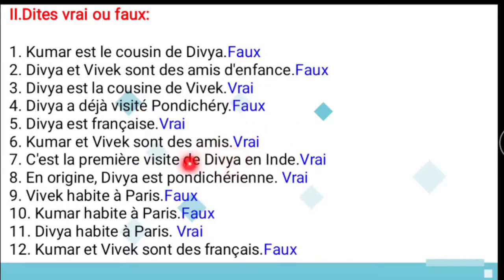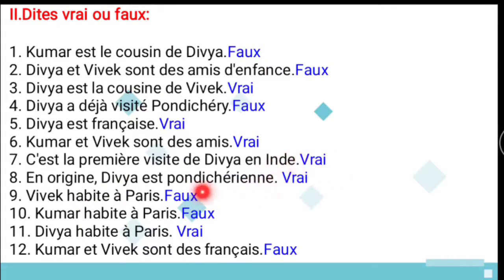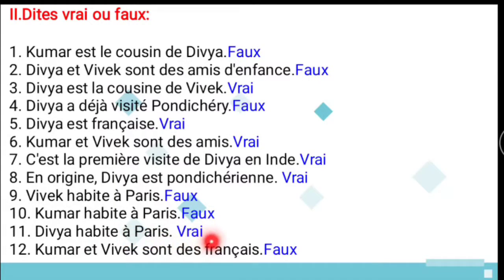Statement 6: Kumar and Vivek are friends — True. Statement 7: This is Divya's first visit to India — True. Statement 8: Divya is a native of Pondicherry — True. Statement 9: Vivek lives in Paris — False, he lives in India. Statement 10: Kumar lives in Paris — False, he also lives in India. Statement 11: Divya lives in Paris — True. Statement 12: Kumar and Vivek are French — False, they are Indians.